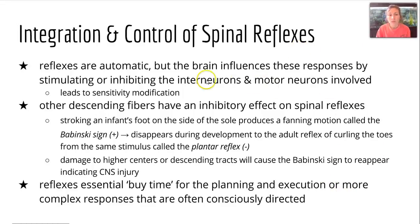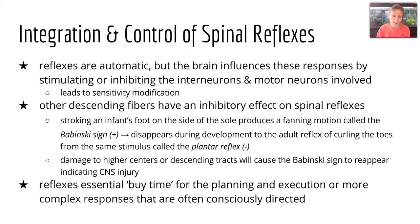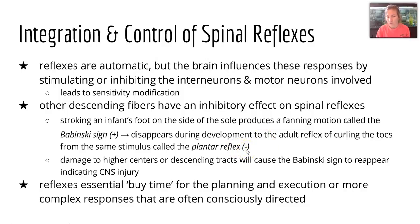For integration and control of spinal reflexes — reflexes are automatic, but the brain does influence these responses by stimulating or inhibiting the interneurons and motor neurons involved, modifying sensitivity, such as how much to pull away or how much to flex. There are also descending fibers with inhibitory effects on spinal reflexes. One example is the Babinski sign: stroking an infant's foot on the sole produces a fanning motion — the positive Babinski reflex. This disappears in adulthood, replaced by toe curling called the plantar or Babinski-negative reflex. If higher centers like the brain are damaged, the fanning motion can reappear, indicating central nervous system injury.